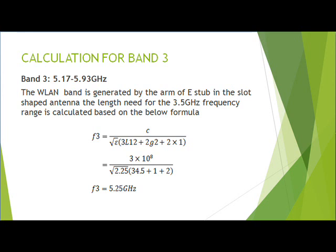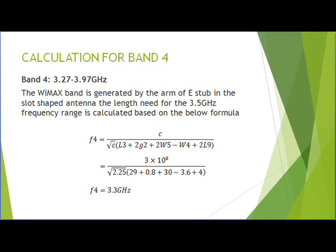5.4 GHz is used for WLAN using L12, the length of the double folded stub in the T-shaped feed patch. 4 to 8 GHz for C-band is achieved by giving two feedings to the antenna.